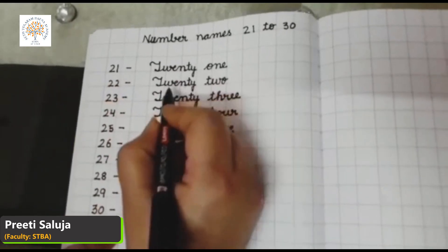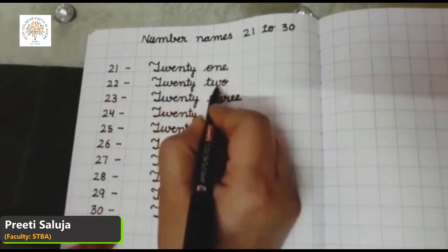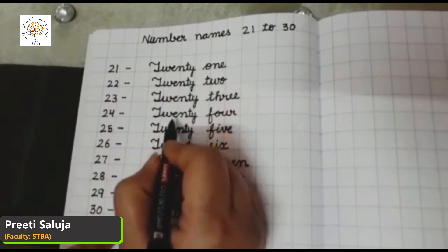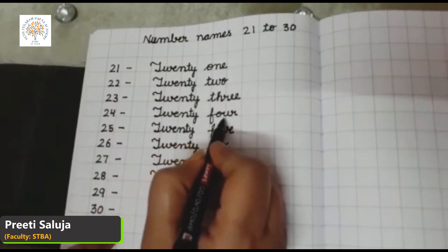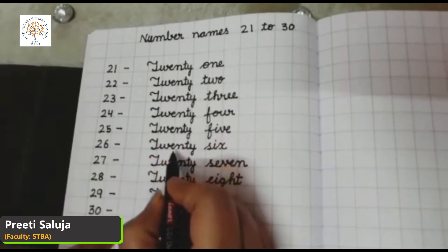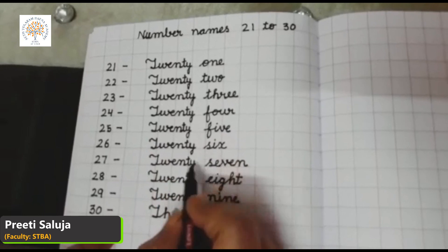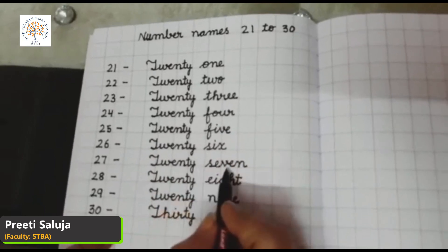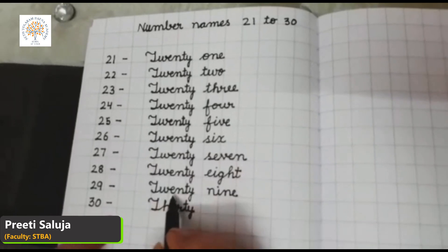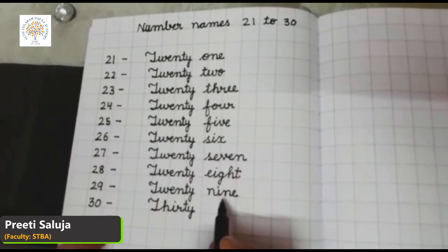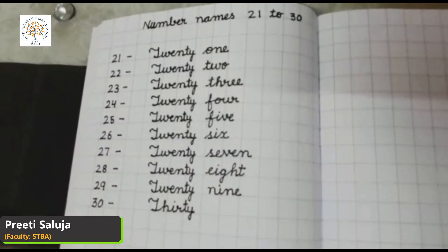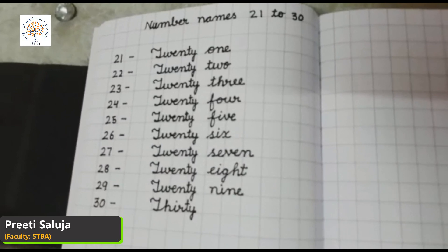Let's revise once more. 21, 22, 23, 24, 25, 26, 27, 28, 29, 30.